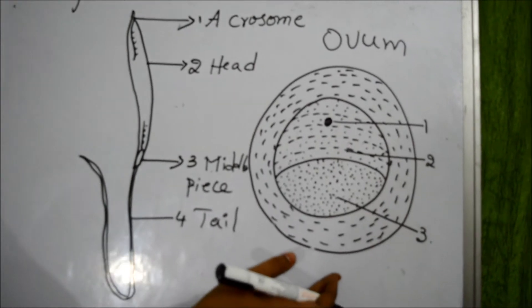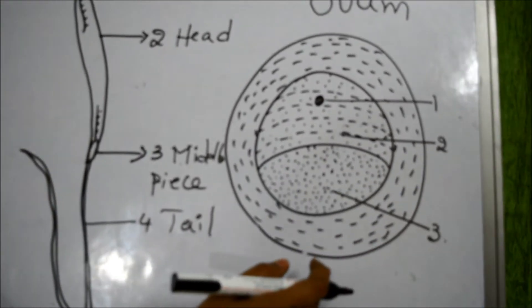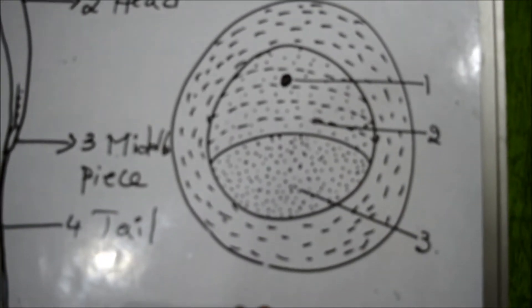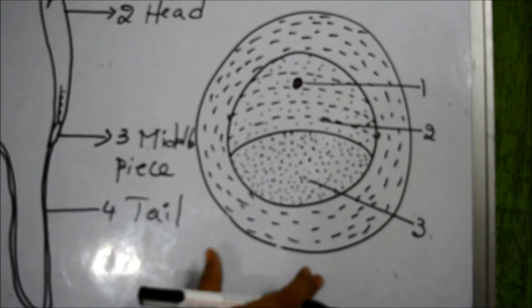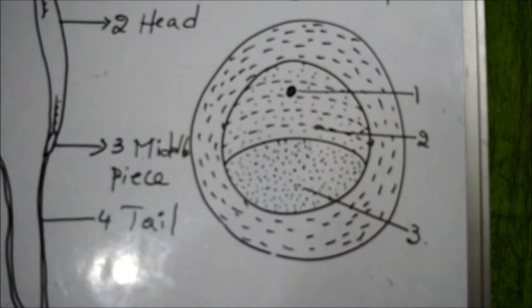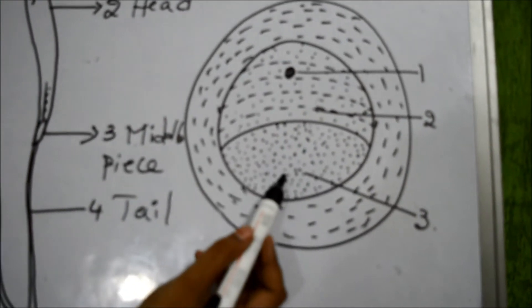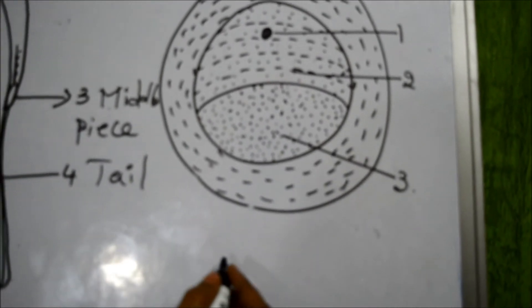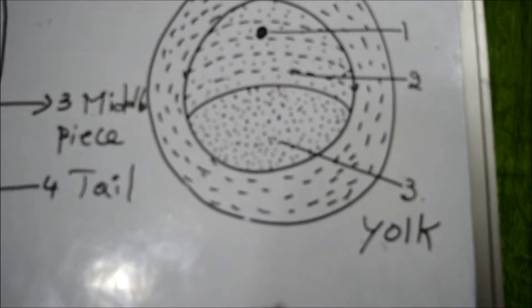Now let us come to the egg or ova which are produced in the female reproductive system. When compared to spermatozoa, the ovums are large in size and they do not move and they are stationary. In ova of some animals they preserve the food in the part of yolk. This is the yolk, the part which may store food in the ovum.